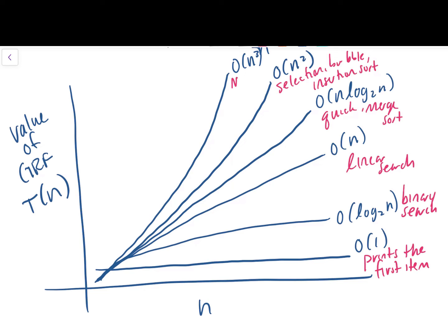Next, we have big O of n. This is the linear time complexity family. And we just saw an example of that with print array. Another example would be linear search. Next, kind of a curve to this line here. This is big O of n log base 2 of n. This is the log linear family.